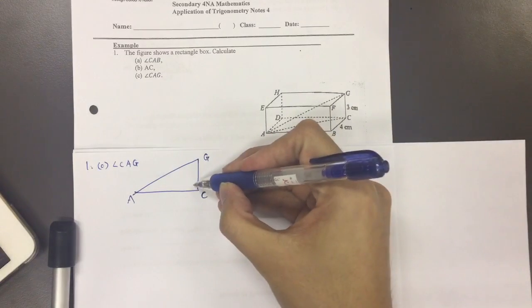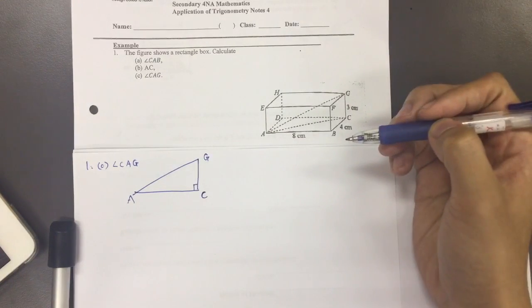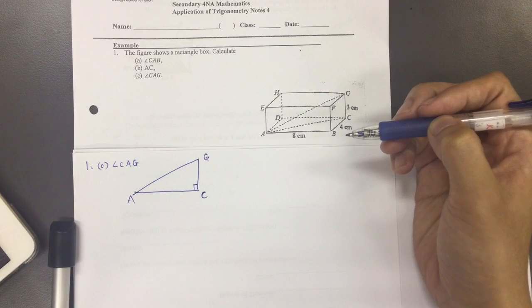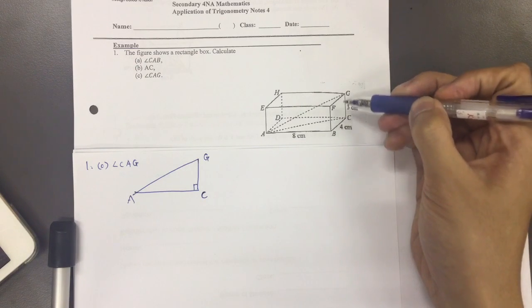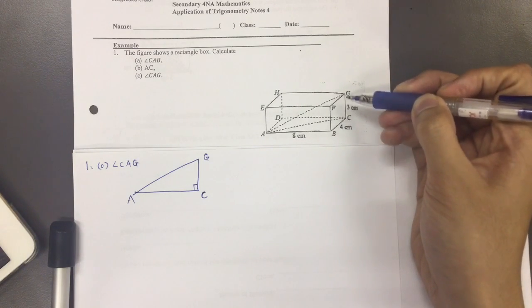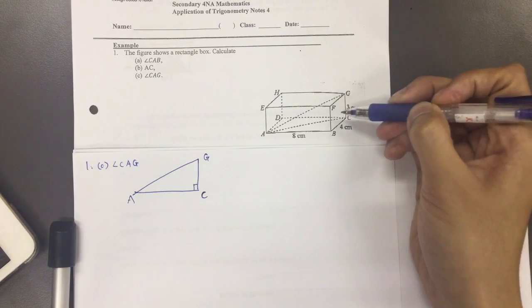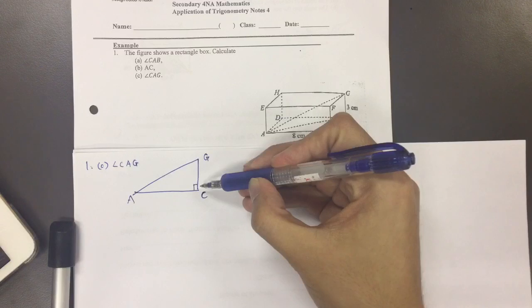Now I can say this is confirmed a right-angled triangle. Why? Well because this side is part of the rectangular box and it's upright or vertical. So therefore it's definitely 90 degrees here.